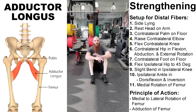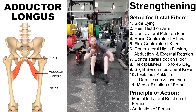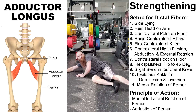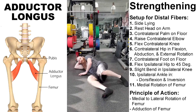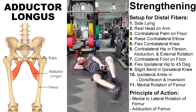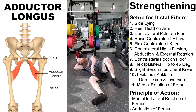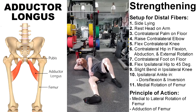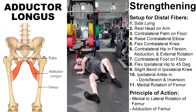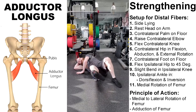We're going to take you through three strengthening exercises for the adductor longus. This first one is going to be for the distal fibers. We're going to be in a sidelying position — use your arm as a pillow, rest your head on there. With the contralateral leg, we're going to go into external rotation and abduction, plant your foot firmly on the floor. With the ipsilateral leg, 45-degree flexion of the femur, slight bend in the knee, dorsiflexion of the ankle, inversion of the ankle, medial rotation of the femur, palms facing the floor, raise the elbows. The principle of action: we're going from medial to lateral rotation on an adduction, and that is for the distal fibers.